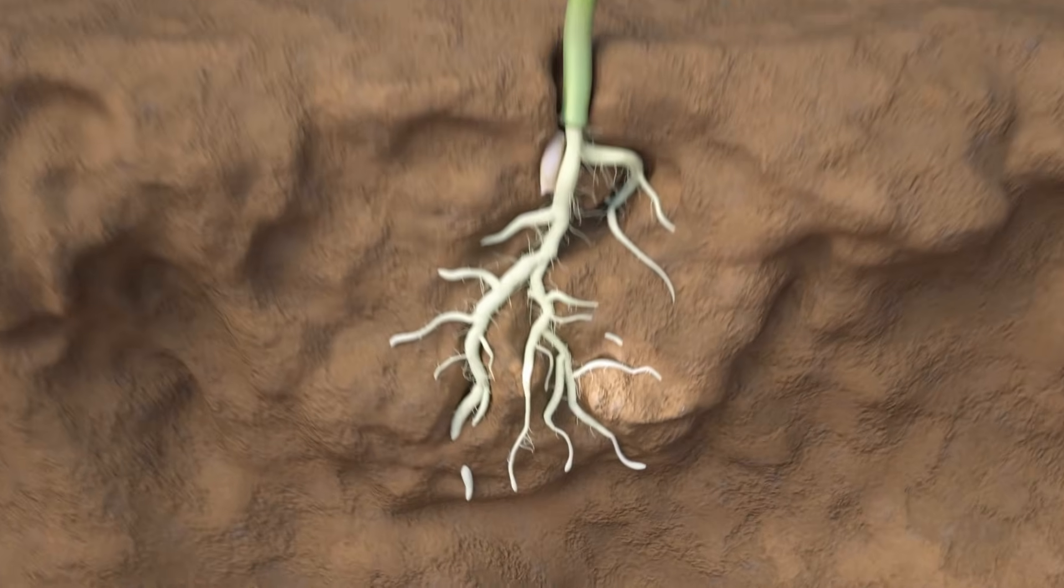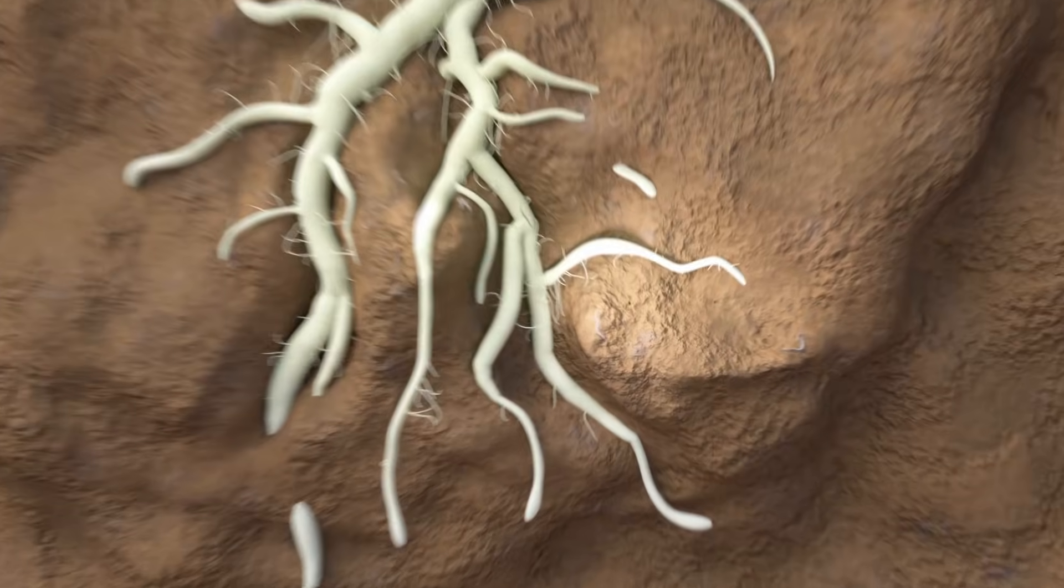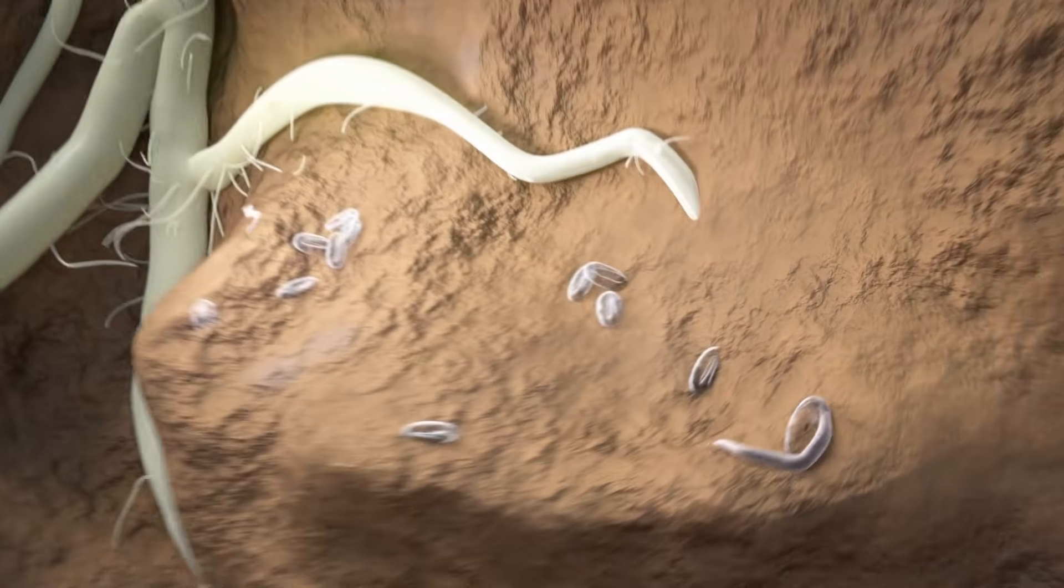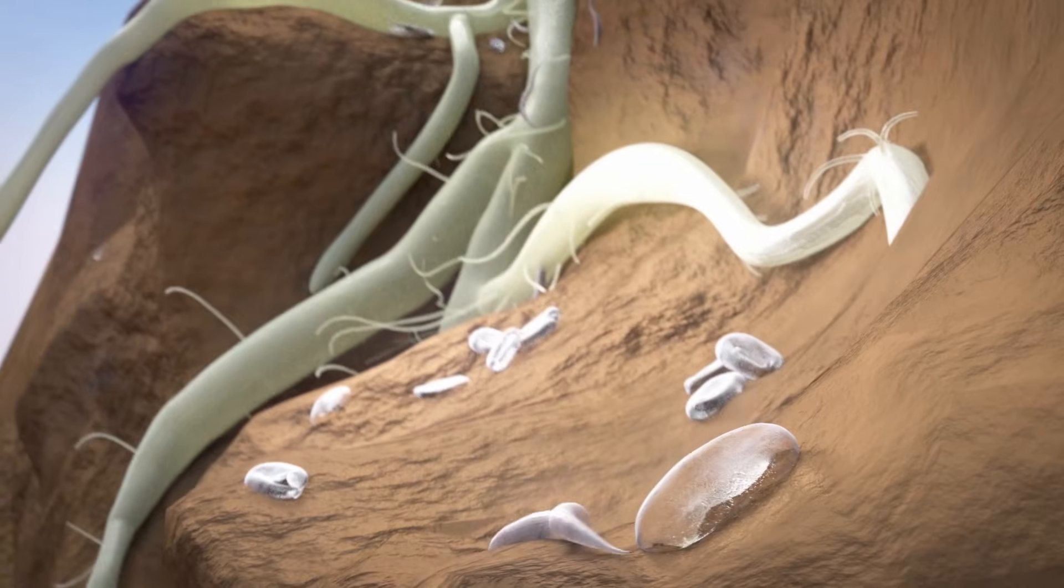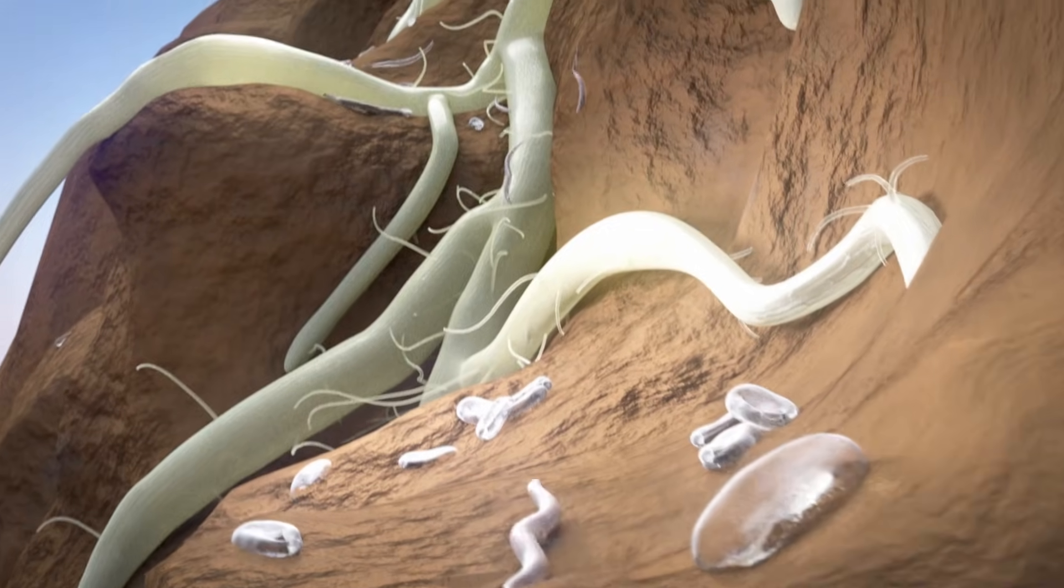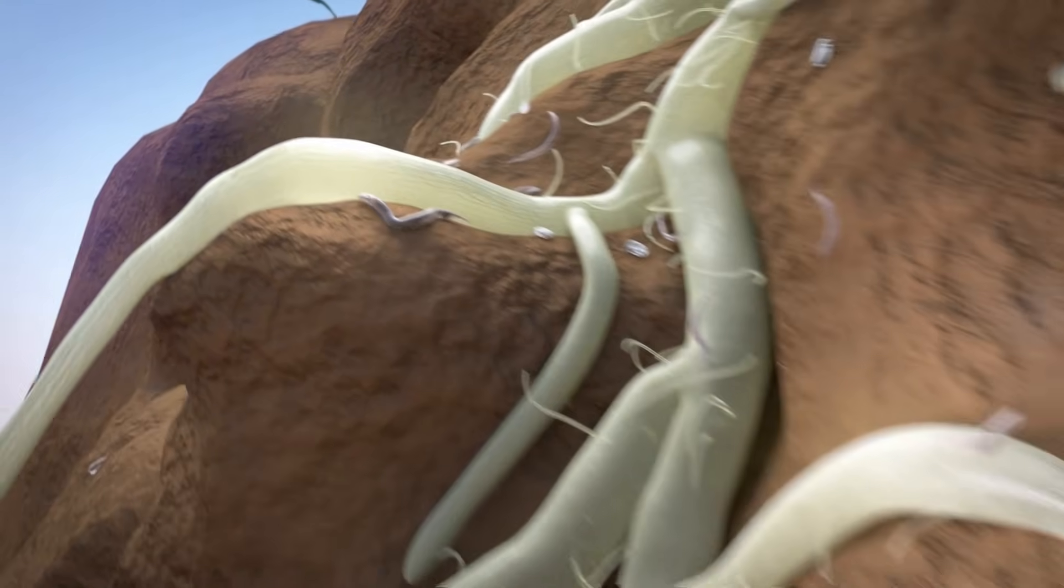Nematodes are responsible for heavy yield and crop losses in fruits and vegetables all over the globe. Tiny eel worms like the root knot nematode live in the soil and the larvae attack plant roots.